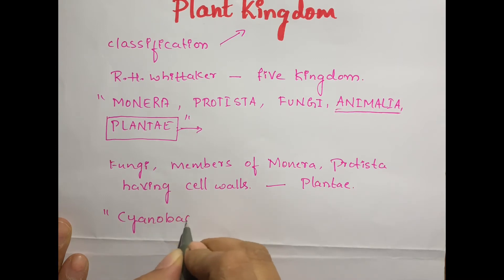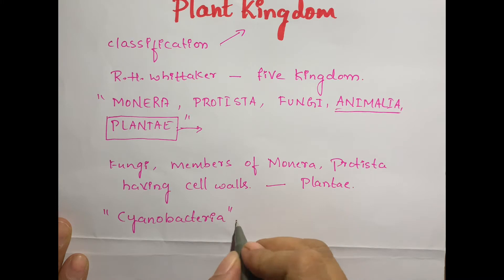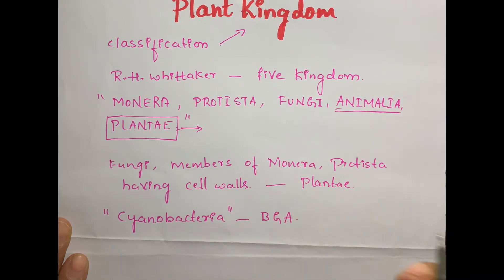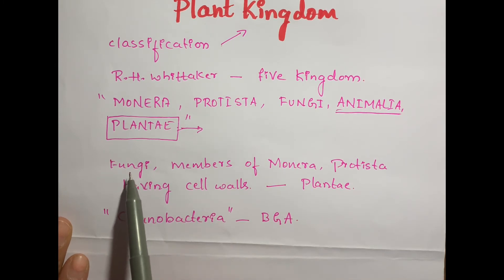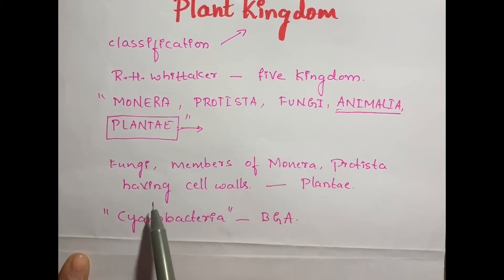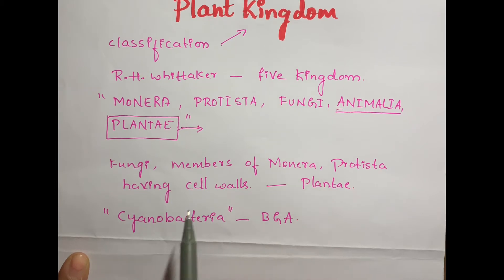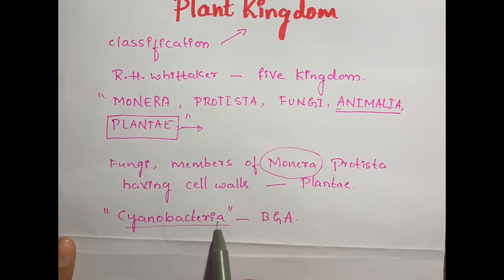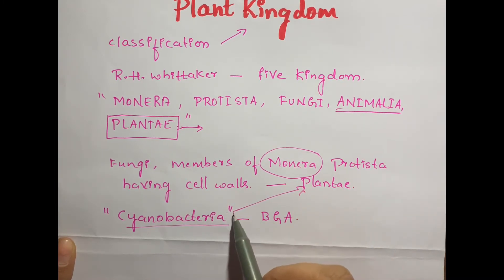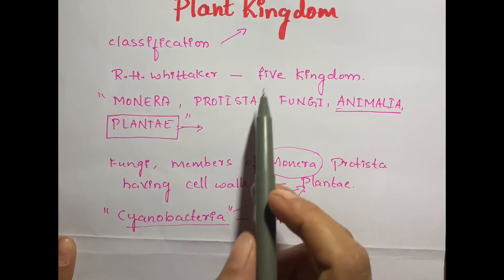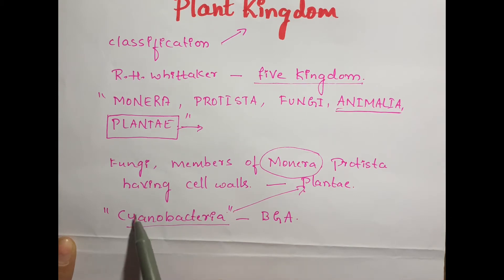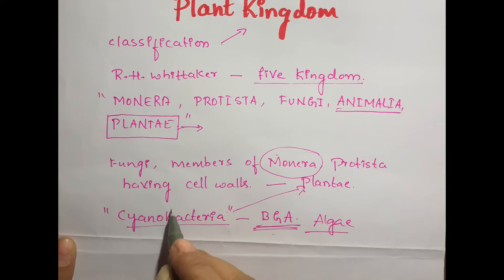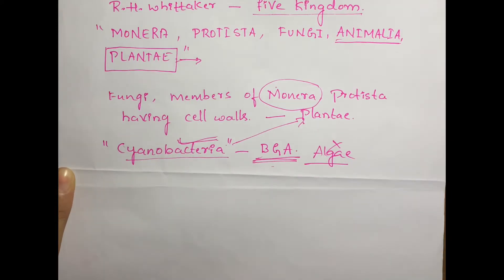As time changed, these members were moved to their respective kingdoms. One such organism is cyanobacteria, also called blue-green algae. Cyanobacteria currently belongs to Monera, but previously it was placed in Plantae because it had a cell wall. After the origination of the five kingdom system of classification, cyanobacteria was moved to Monera. So blue-green algae is no more considered an algae — it is actually a bacteria.